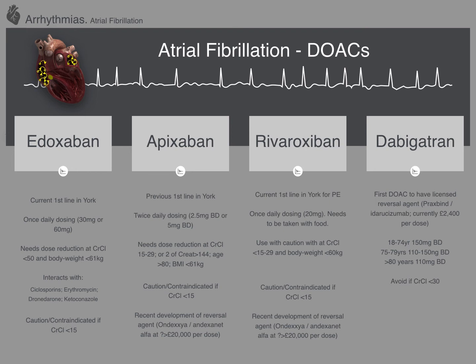We are now getting to the point that we do have reversal agents for some DOACs. Dabigatran was the first to have a reversal agent — Praxbind is available. I've never used it and don't think I've ever seen it used; it's getting close to about £3,000 per dose. There is also a reversal agent now FDA-approved that works for both Apixaban and Rivaroxaban. I've never seen it used and my understanding is that the cost at the moment would be over £20,000 per dose.